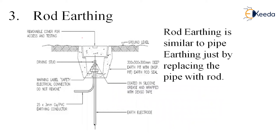In the rod earthing system, everything is the same. Dig a hole, insert a rod instead of a pipe, connect it with the copper wire, and flush it up with the ground level. Maintain moisture. Copper wire is used because it has maximum conductivity. Rod earthing is similar to pipe earthing, just replacing the pipe with a rod. Connect the rod with the wire and connect it with the system in the house.